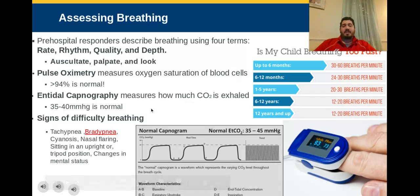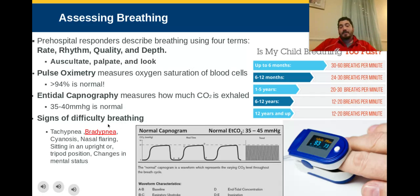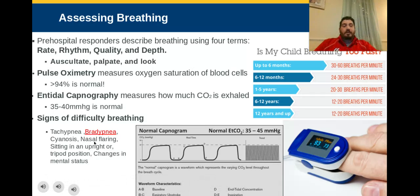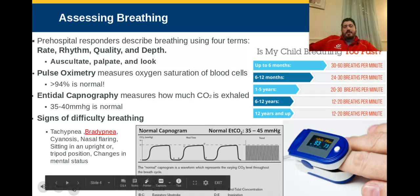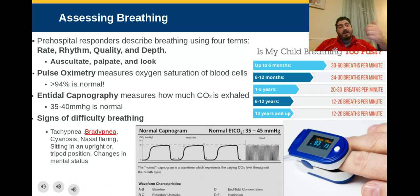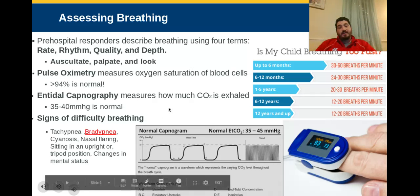We also have our classic signs of difficulty breathing. Tachypnea means fast breathing; bradypnea means slow breathing. Cyanosis is when you're turning blue because you're not getting enough oxygen. Nasal flaring occurs when you're breathing so hard your nostrils open up. Patients often sit in an upright or tripod position. Changes in mental status are a huge sign — if you're not getting enough oxygen, your brain won't function properly. The patient won't be alert to person, place, time, and event.